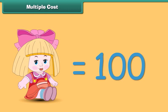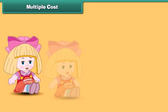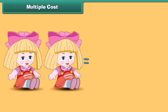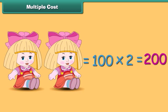So, the cost of a single doll is rupees 100. The multiple cost of two dolls is equal to rupees 100 multiplied by 2. The multiple cost of the dolls is rupees 200. A multiple cost is the cost of more than one unit and is calculated as unit cost multiplied by number of items.